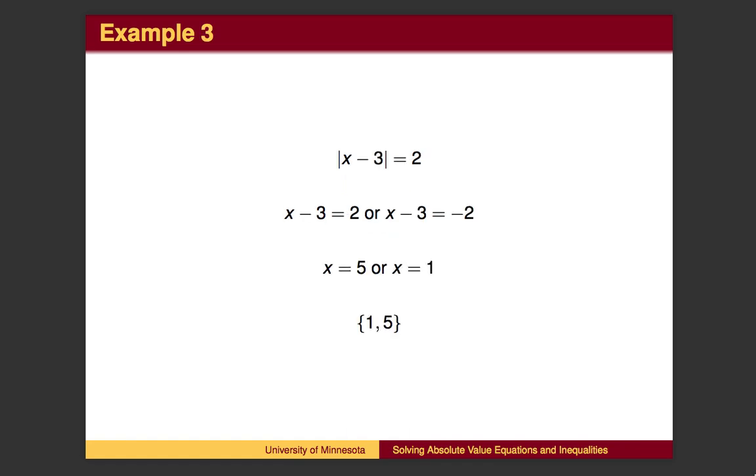Once again, the thing we are taking the absolute value of, in this case x minus 3, could either be 2 or negative 2. We need to solve for both possibilities. We begin by setting the thing inside the absolute value equal to both 2 and negative 2, and solving these equations separately by adding 3 to both sides.